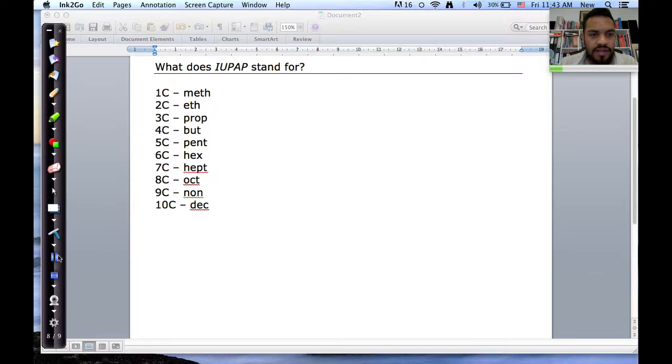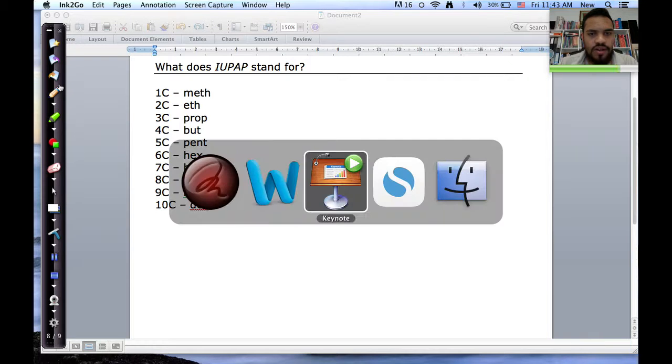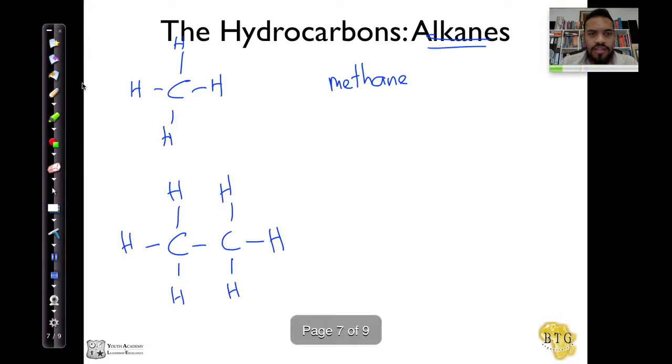We've got ethane, right? So, on the summary sheet, we've got eth, and let's just pull that up again. So, two carbons is eth, right? And it's only got single bonds, and it's part of the alkanes, so it becomes ethane, right?